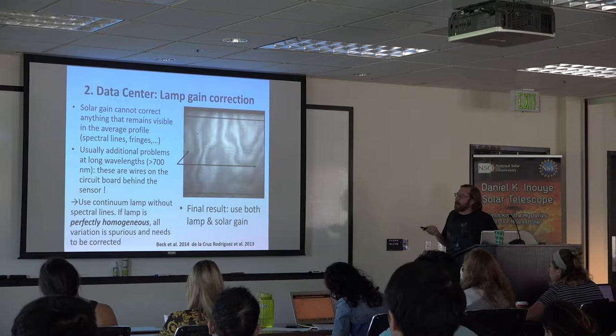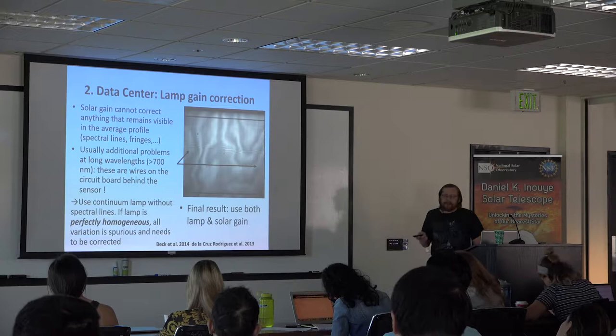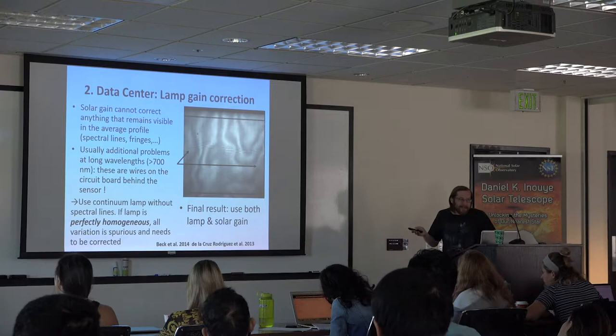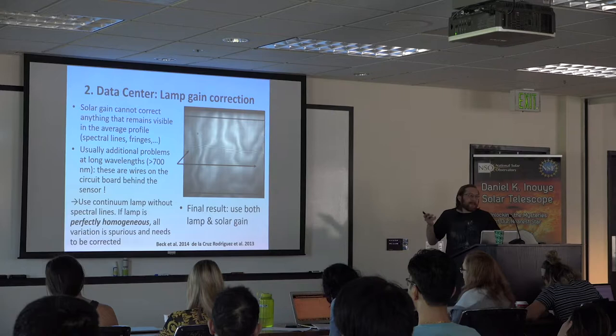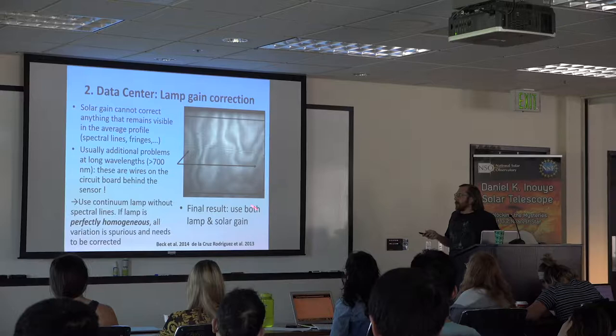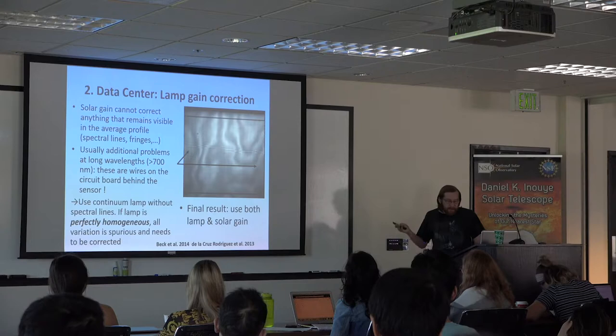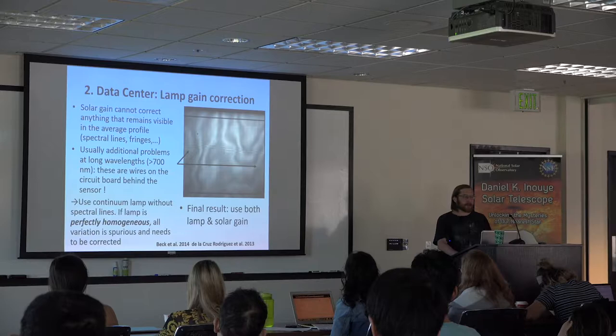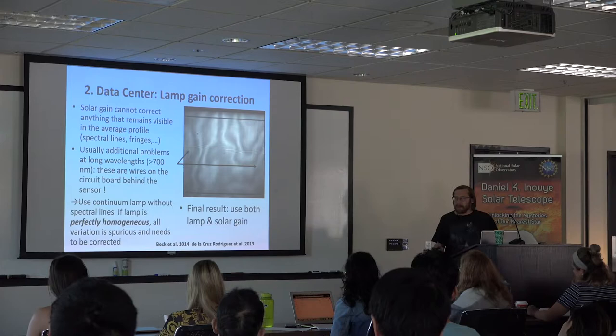The main problem is you cannot simply rely on the lamp flat alone, because it only works if the lamp illumination is perfectly homogeneous — which it is not. It usually introduces intensity trends in the spectral and spatial dimensions. The final result is that you have to do a two-step correction, using both the lamp flat and the solar flat and applying corrections on both. The hope is you are not going to have to do it yourself, but there are features that can be left over.